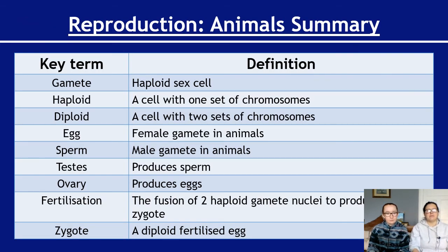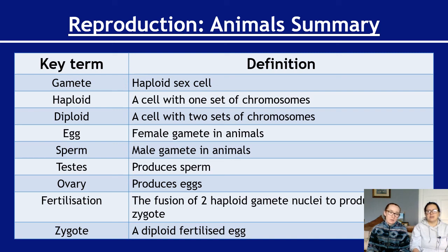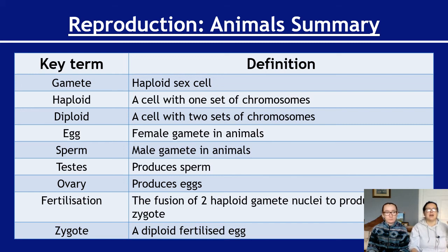To summarize: a gamete is a haploid sex cell; haploid is a cell with one set of chromosomes; diploid is a cell with two sets. The egg is the female gamete in animals; sperm is the male gamete. The testes is where sperm is produced; the ovary is where eggs are produced. Fertilization is the fusion of two haploid gametes' nuclei to produce a zygote, which is a diploid fertilized egg. The next video will look at plant reproduction.